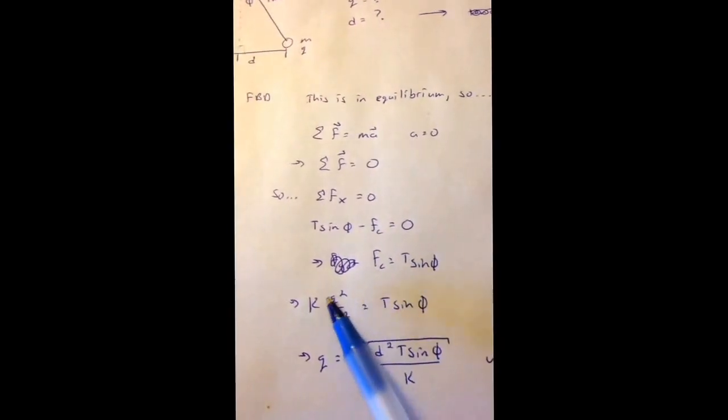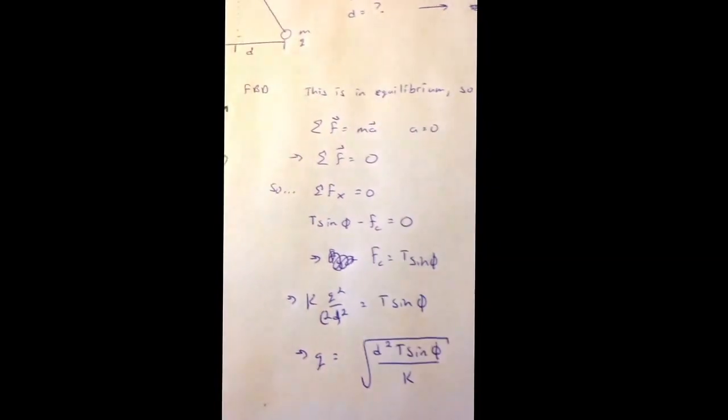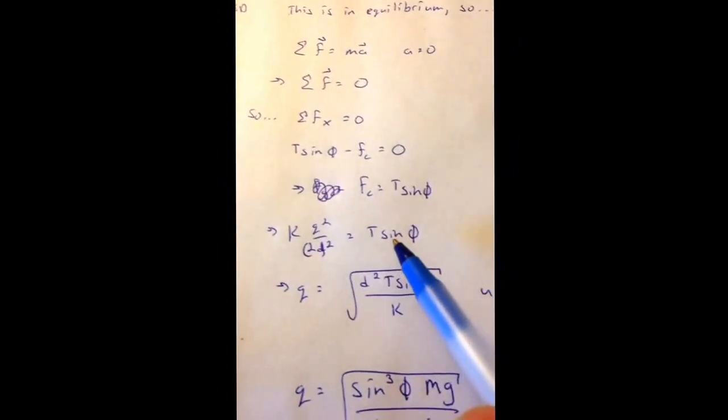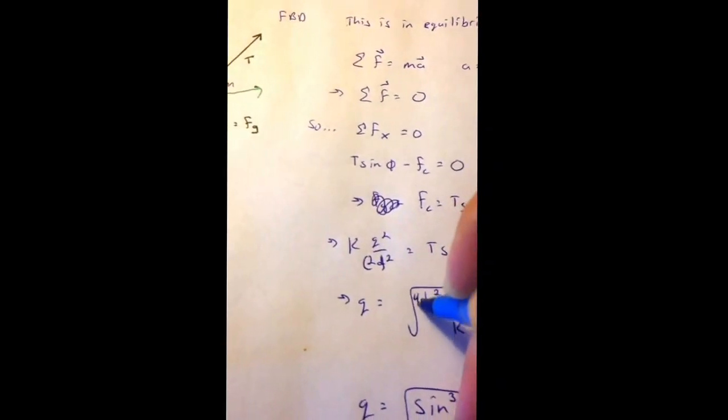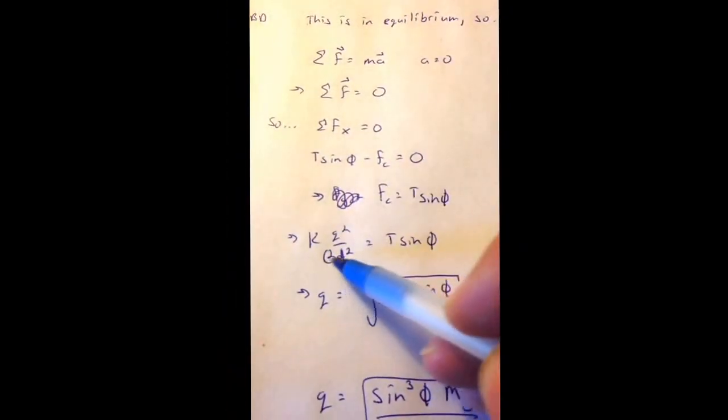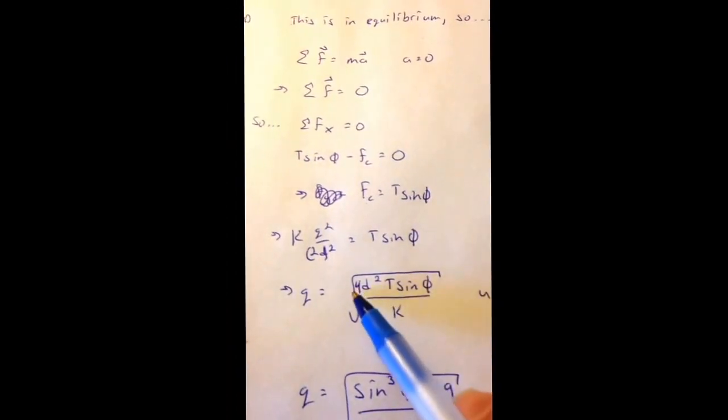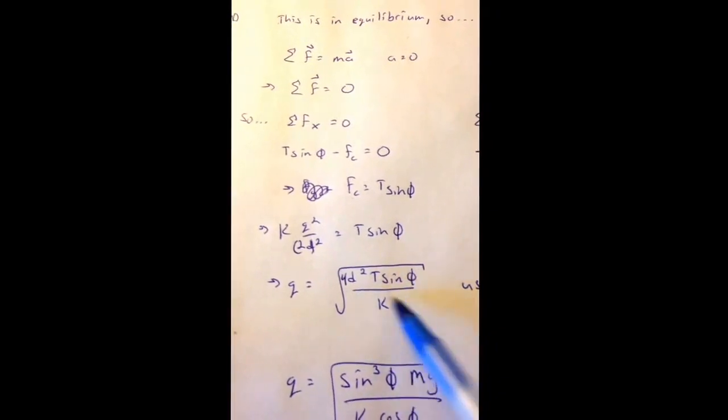I'm going to solve for the Coulomb force, which is just T sine phi. Now I'm going to unpack it. kq squared, and again, I made a mistake here. This should be 2d squared equals T sine phi. So I come down here, and I solve this equation for q. What I'm going to come up with is this should be a 4 right here, because if I square 2d, I'm going to get 4d squared.